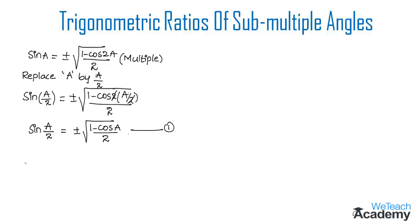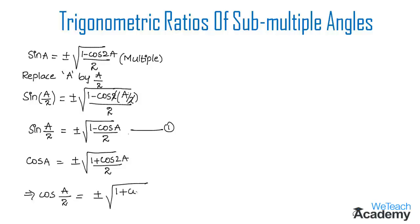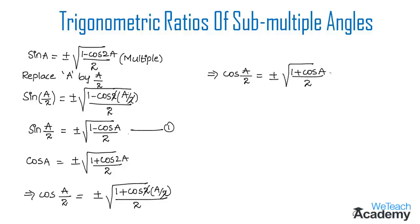Now let us derive the formula for cosine. We consider the formula: cos(a) = ±√((1 + cos 2a) / 2), where 2a is the multiple angle. Replacing a with a/2, we get cos(a/2) = ±√((1 + cos 2·(a/2)) / 2). The 2s cancel, giving cos(a/2) = ±√((1 + cos a) / 2). This is equation 2.